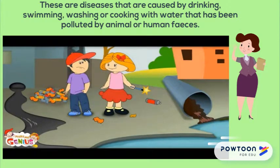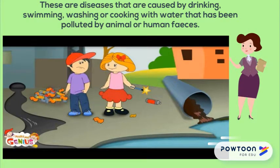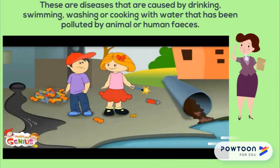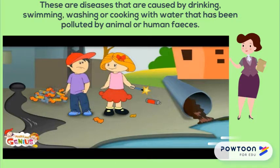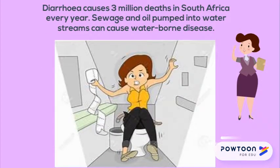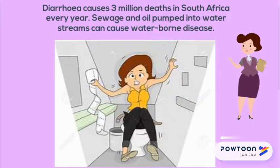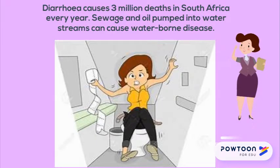Waterborne diseases are diseases that are caused by drinking, swimming, washing or cooking with water that has been polluted by animals or human feces. Examples of waterborne diseases are cholera, typhoid and diarrhea. Diarrhea causes 3 million deaths in South Africa every year. Sewage and oil pumped into water streams can also cause waterborne diseases.